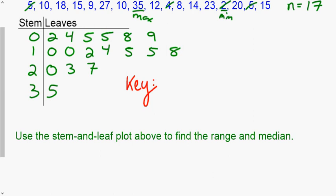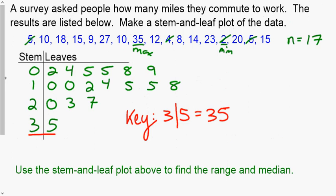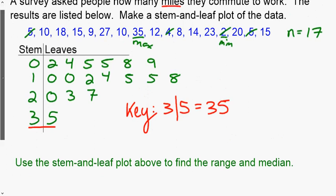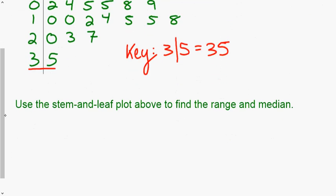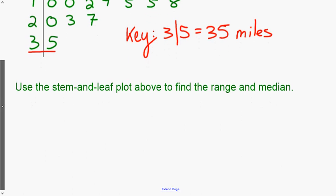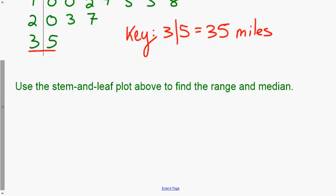Again the key is the important part. When you pick the key, when you make the key, pick any data point. Here there's 3 bar 5, so 3 bar 5 represents 35, and then what was our units, you go back to the problem. It says how many miles they commute to work, so 3 bar 5 represents 35 miles. That is creating a stem-and-leaf plot.